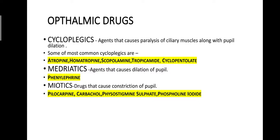Cycloplegia means paralysis of ciliary muscles, whereas cycloplegics are the drugs that cause cycloplegia or paralysis of ciliary muscles. Examples of cycloplegics include atropine, homatropine, scopolamine, tropicamide, and cyclopentolate.